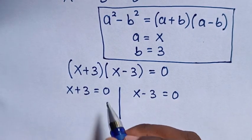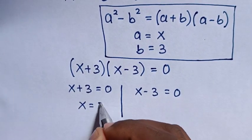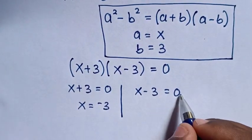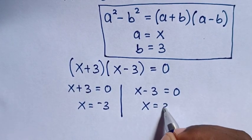Then from here, I will take 3 to the right side, so it will be x is equal to negative 3, and this you take to the right side, x is equal to 3.